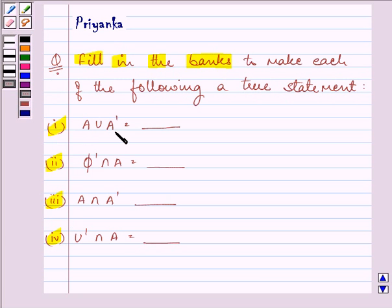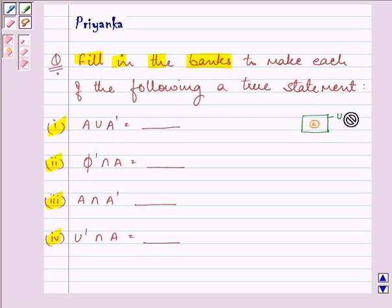Right, the first blank says A union A complement. Let us have a universal set, a very small universal set over here, and let this be set A. So set A has all the elements in this, and A complement means everything else in the universal set except what is there in A.